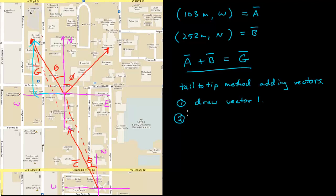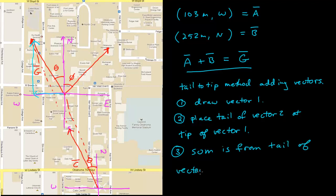Then, you place the tail of vector 2 at the tip of vector 1. Then, the sum of these two vectors is from tail of vector 1 to tip of vector 2.